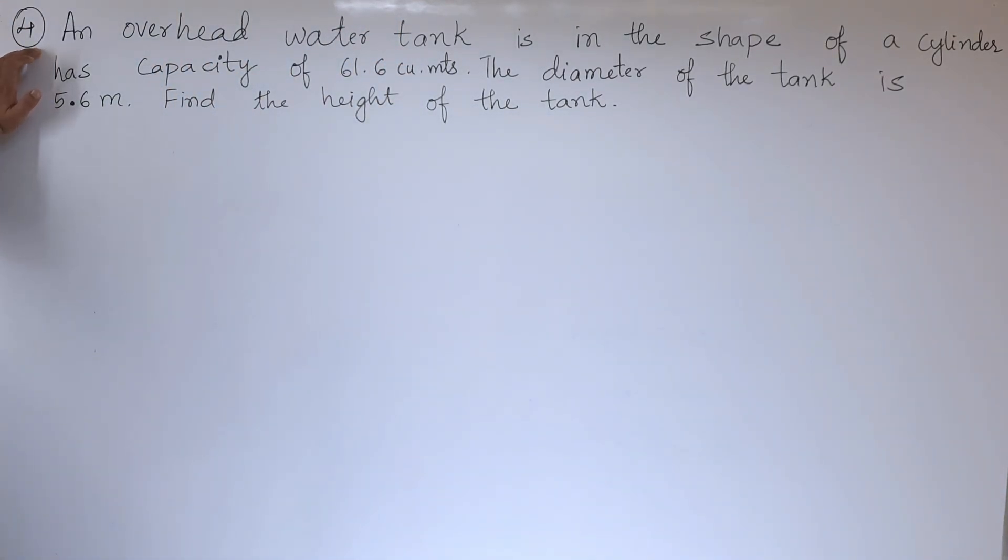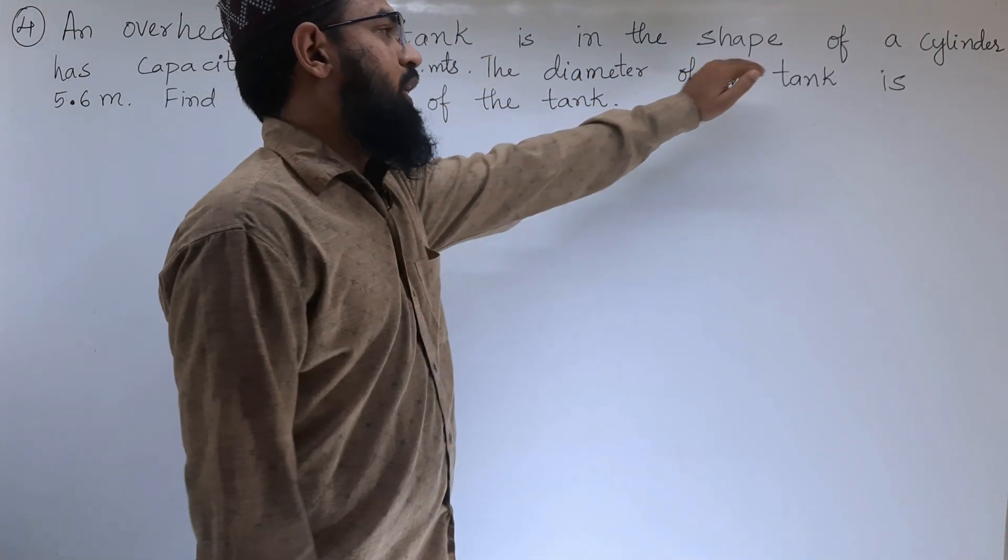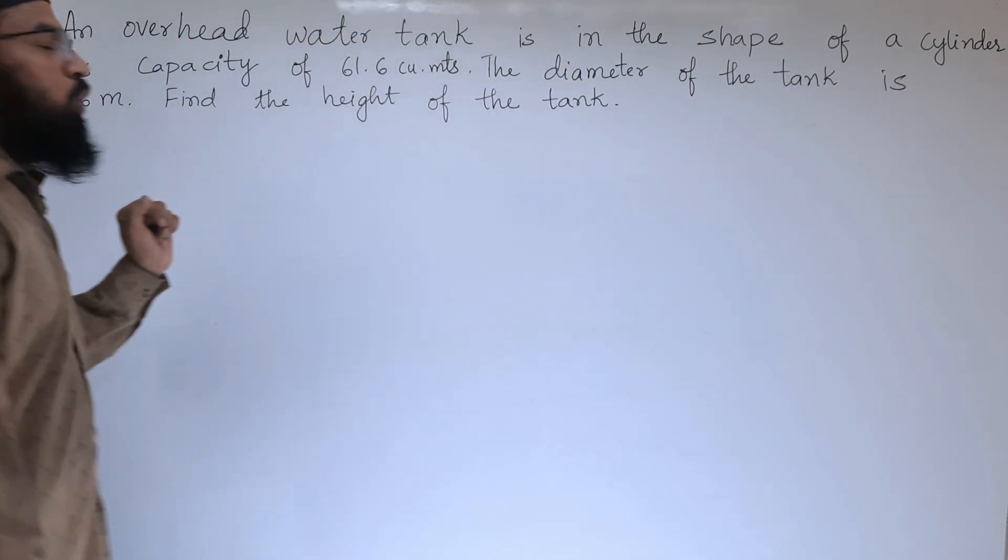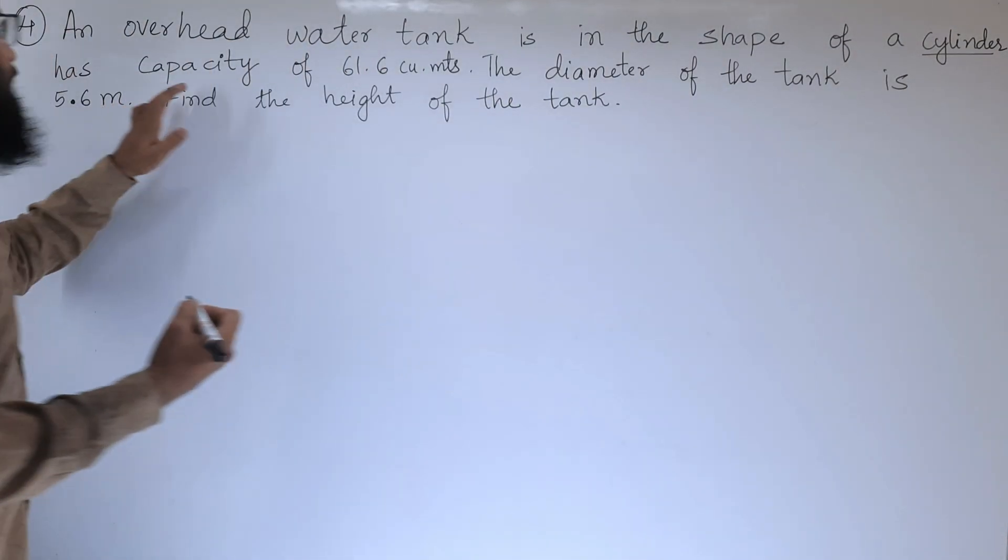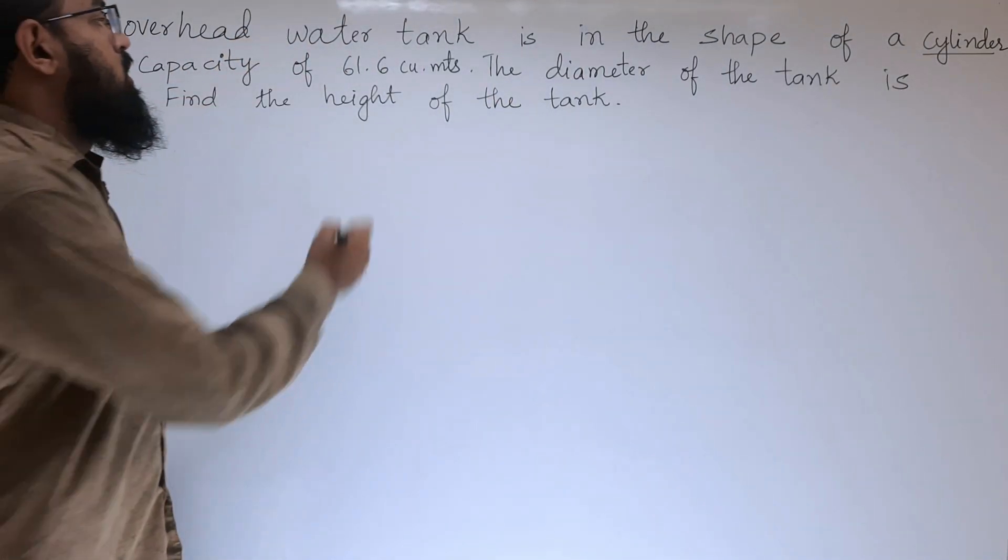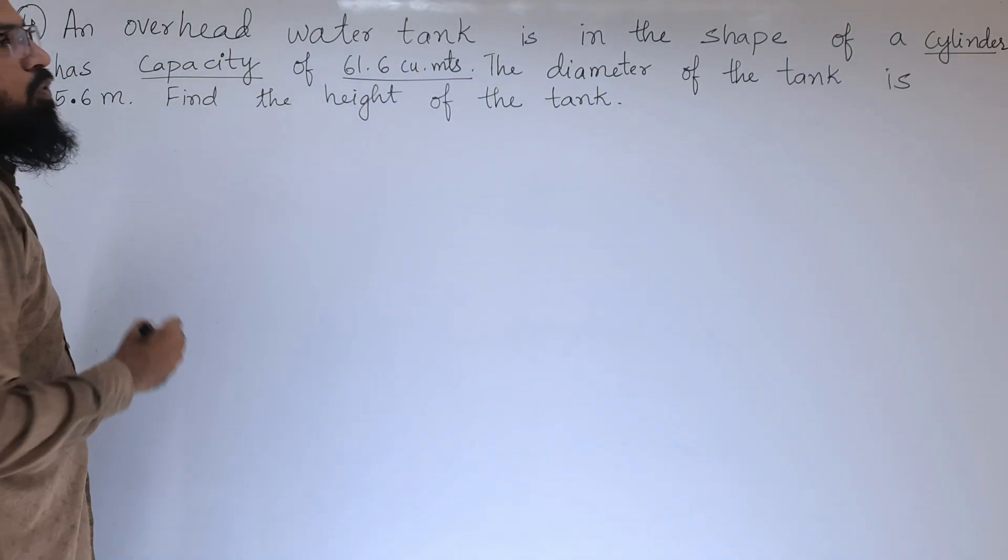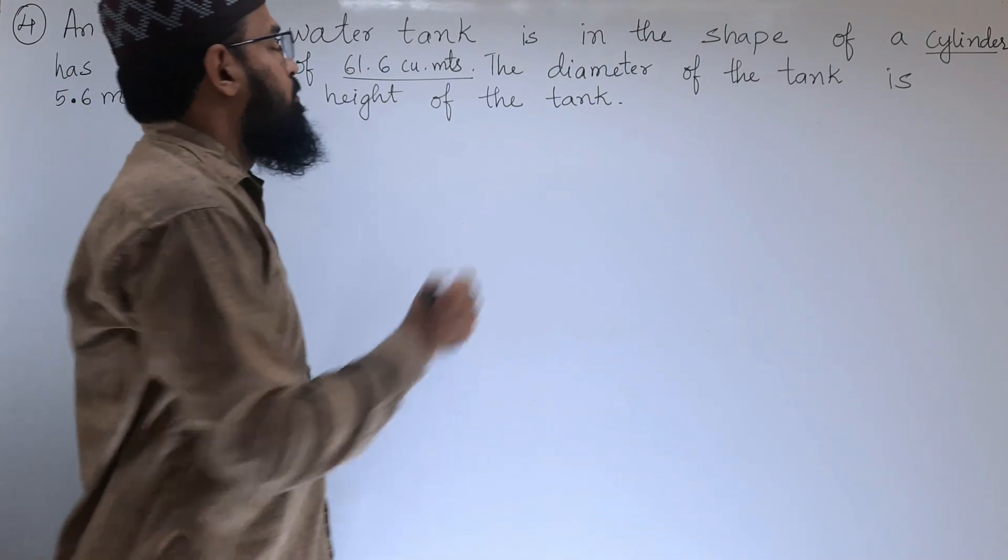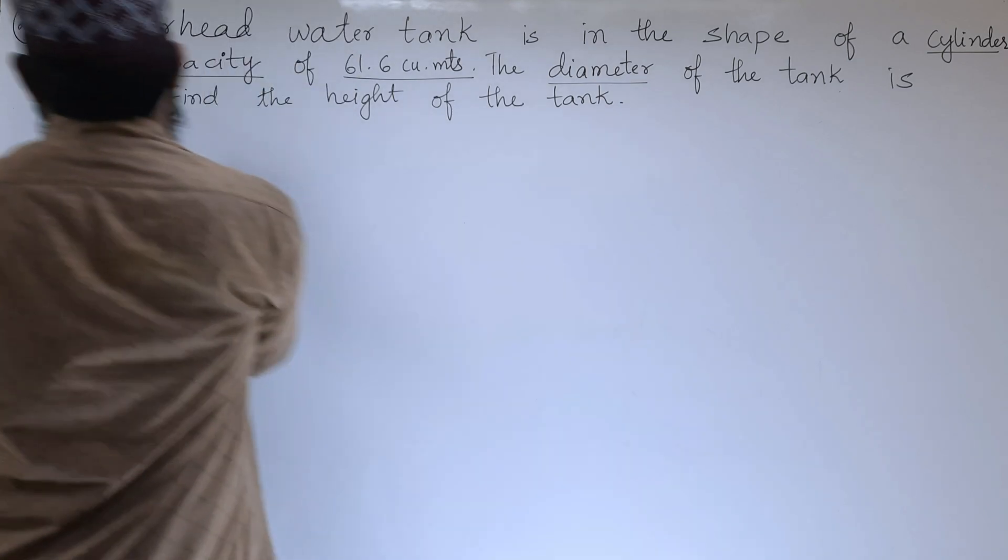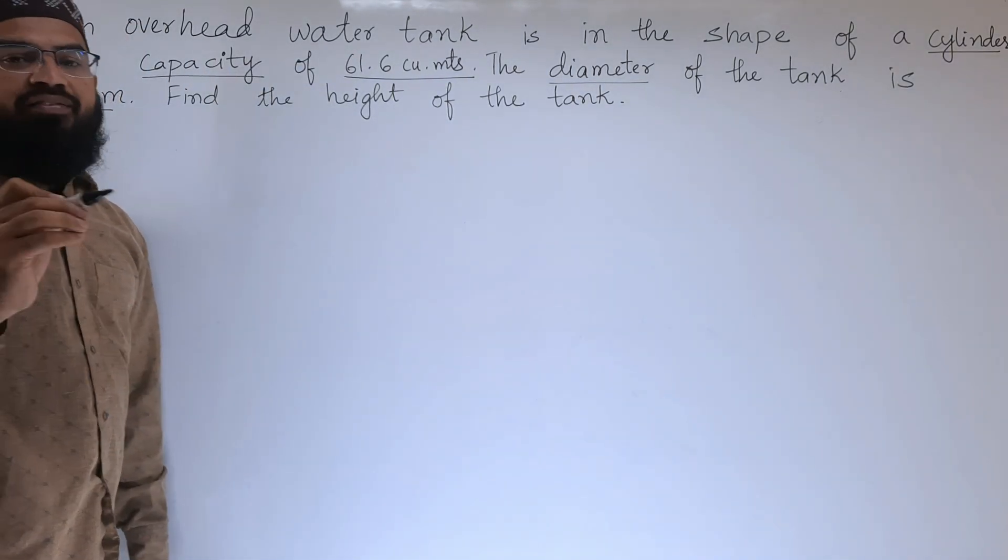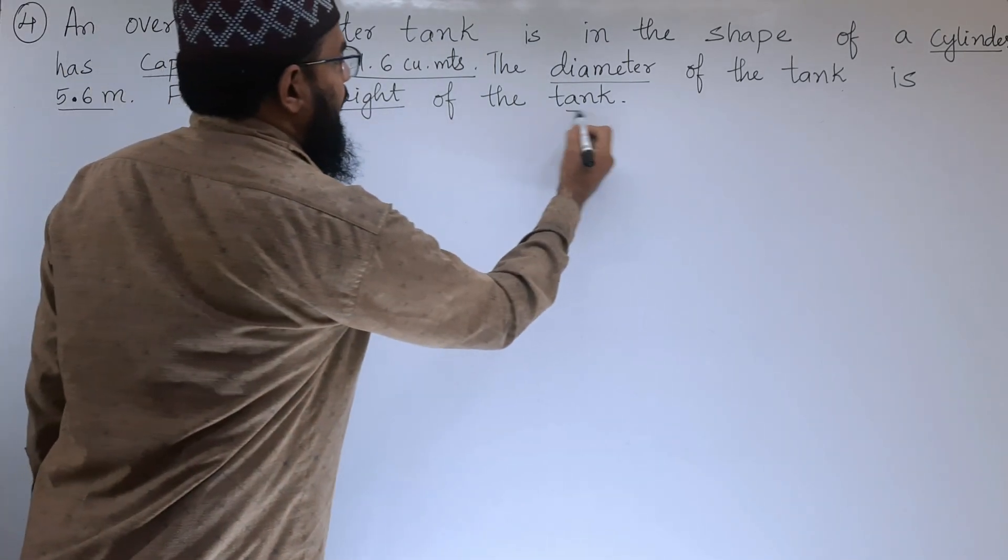In this problem, let us see what is given. An overhead water tank is in the shape of a cylinder. The water tank has a capacity of 61.6 cubic meters. The diameter of the tank is 5.6 meters. They have given the diameter of the water tank and we need to find the height of the tank.